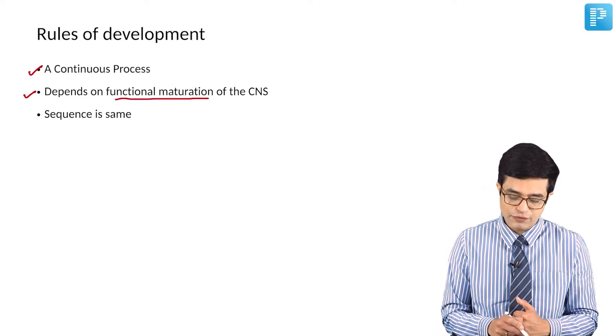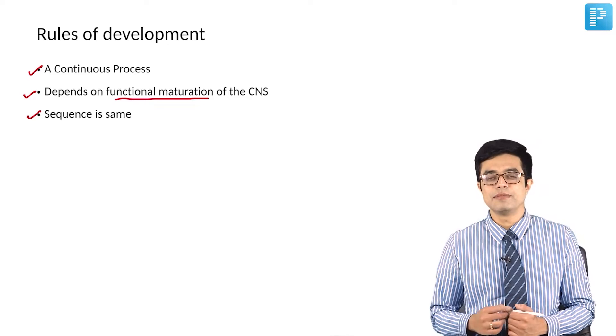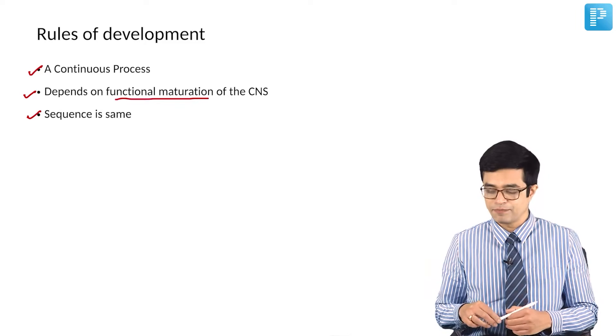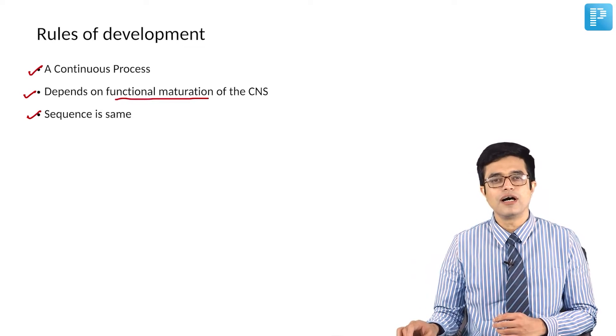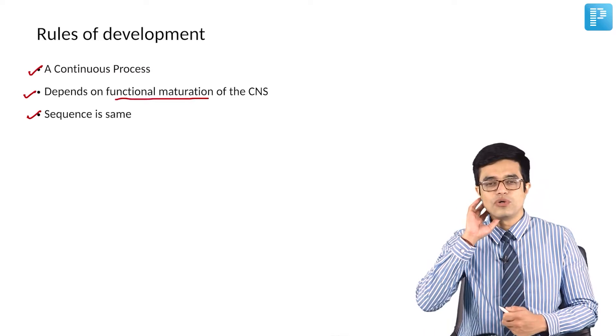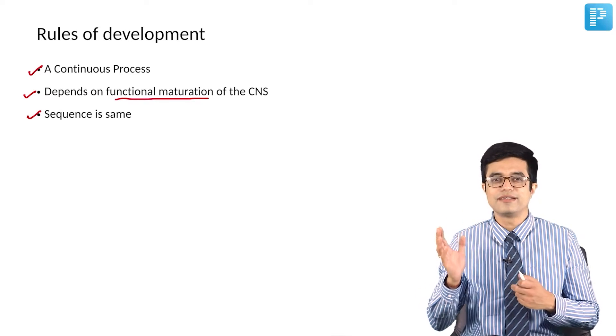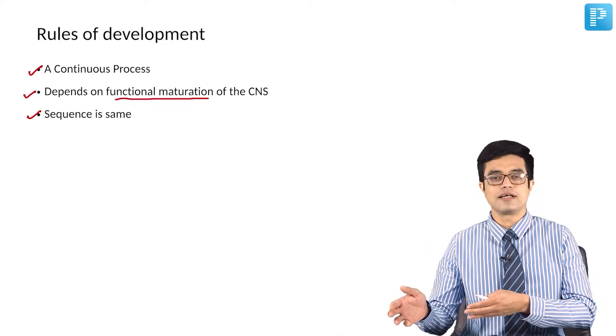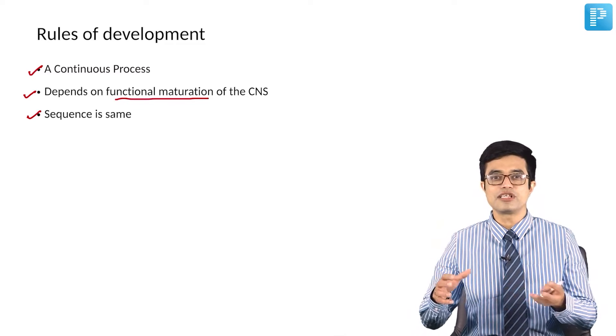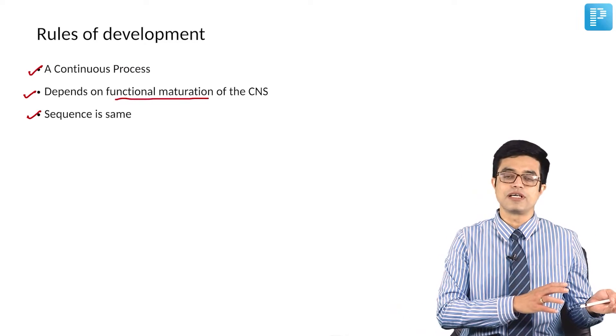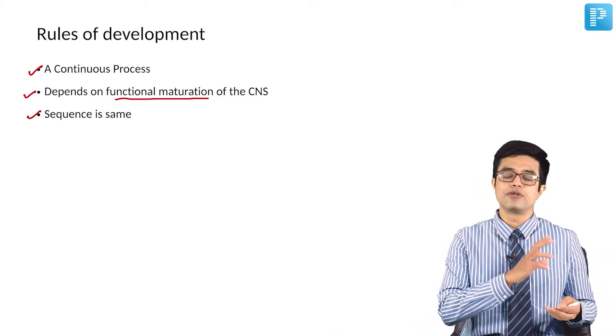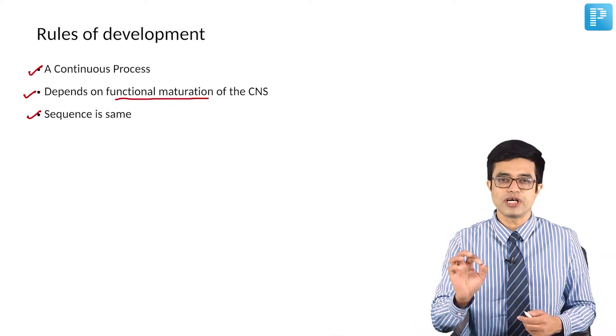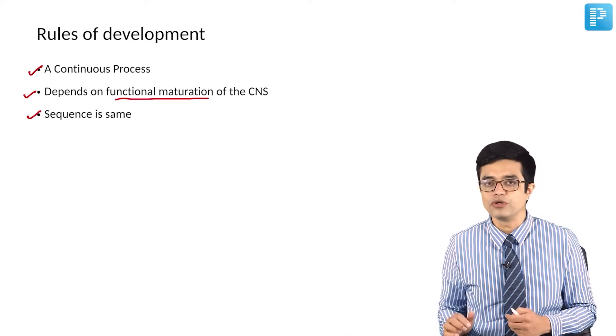Third, the sequence is virtually the same. When I say sequence is the same, I am not talking about a particular milestone will be attained at a certain age. Sequence same means when you talk about a gross motor milestone, a child will first learn to control his neck or head, then the child will be able to sit with support, then sit without support, then stand with support and then start walking. It will not happen that the child will start walking first and then other factors will come into play, other features will come later, head control will come later. No, there is always a particular sequence which is always followed in every child. The timing of attainment may vary from one child to another.